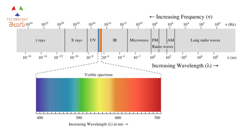I see electromagnetic waves. I see electromagnetic waves in the most spectrum — gamma rays, X-rays, UV rays, IR rays, microwave rays, radio waves — that is what we see.